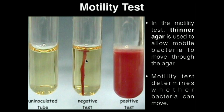In general, if we have the bacteria confined to the place where we stabbed the agar, they're not mobile — they're not motile. They don't move because they just stayed there. However, if we find this red color diffused throughout the tube, that means the bacteria were actually able to move away from the stab and propagate throughout the tube. So this test is positive for motility, whereas the middle tube is actually negative.